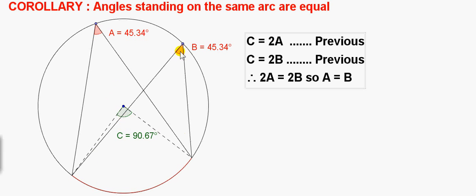Similarly for angle B. Angle B also stands on this arc. So the angle at the centre, C, must be twice this angle as well. So C must equal 2B also.